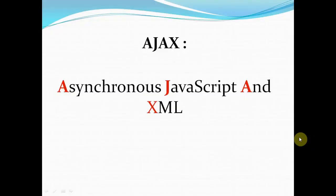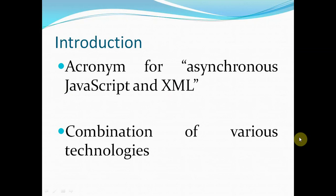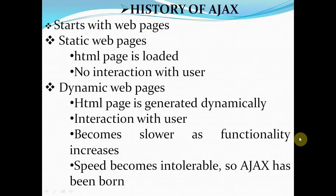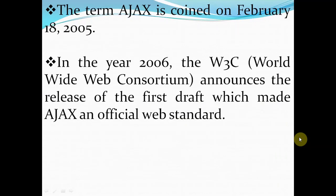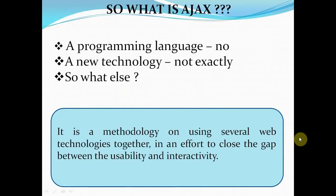New lecture on Ajax — Asynchronous JavaScript and XML. In this lecture I will explain about asynchronous JavaScript and its importance. Ajax is the acronym of Asynchronous JavaScript and XML. It is a combination of various technologies. It started in 2005, and in 2006 the W3C, World Wide Web Consortium, announced the release of the first draft, which made Ajax an official web standard.